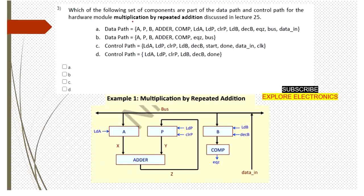The next question asks which set of components are part of the data path and control path for the hardware module multiplication by repeated addition, discussed in Lecture 25. As you can observe in the figure, the data path consists of registers A, P, B, and an adder. The output of the comparator and the bus also constitute the data path. That's why B can be the answer.